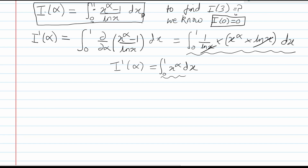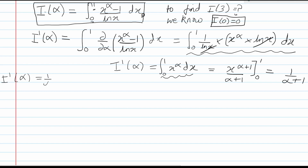I prime of alpha is the integral from 0 to 1 of x to the power alpha dx. Inside the integral, alpha is a constant, so this integrates to x to the power alpha plus 1 divided by alpha plus 1, evaluated from 0 to 1. Using the fundamental theorem of calculus, this is equal to 1 upon alpha plus 1. Therefore, I prime of alpha equals 1 upon alpha plus 1.